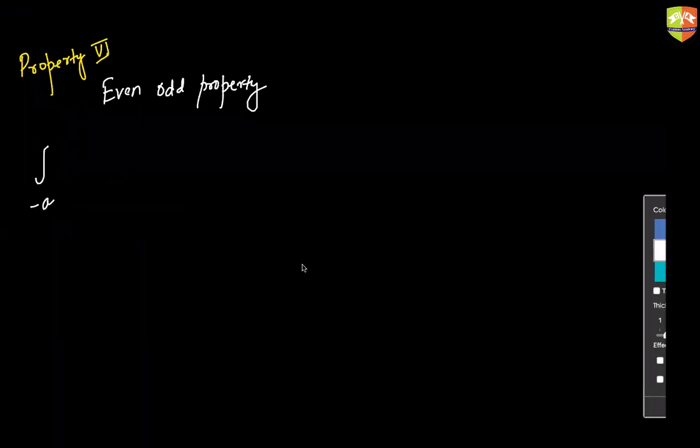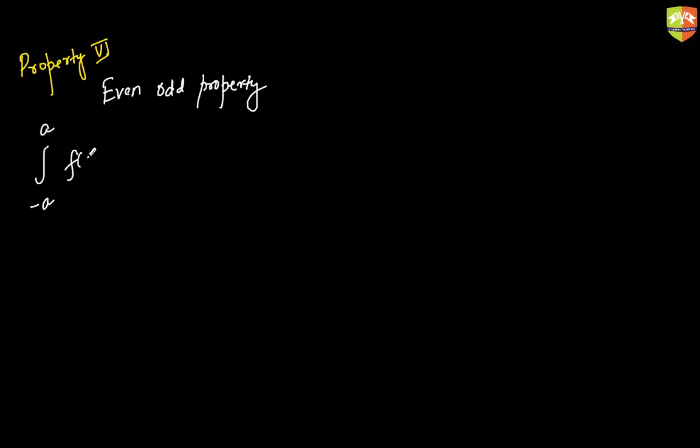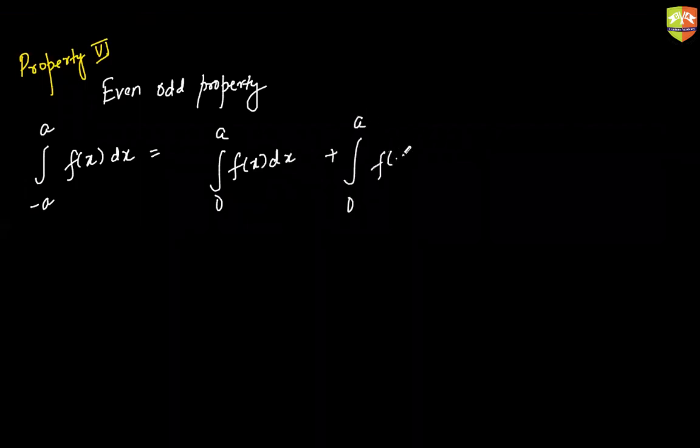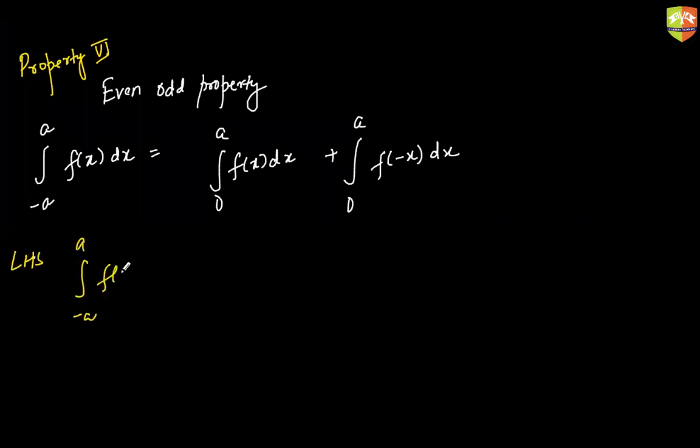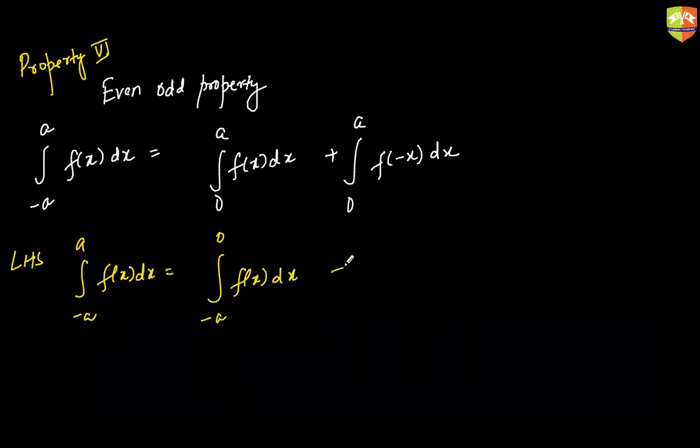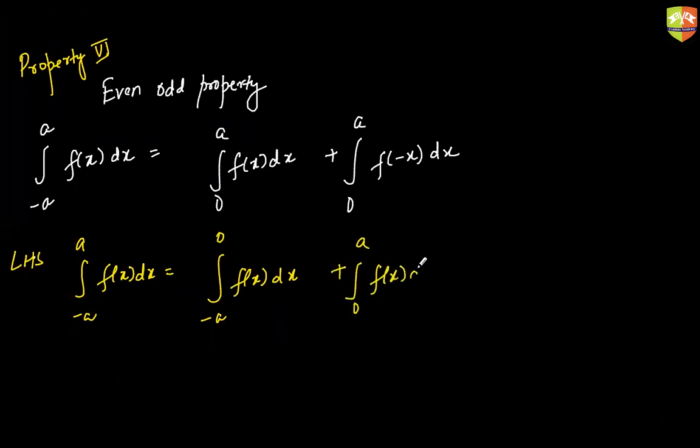It says that if you are integrating a function from minus a to a it becomes integration of f from 0 to a plus integration of f from 0 to a. Let me prove this mathematically first. So let me start with the left hand side. So minus a to a f you can break it up as minus a to 0 and 0 to a. Let's not disturb this part. Let's work on this part.